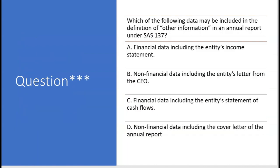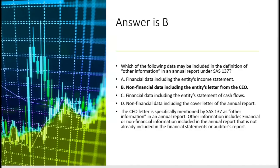Which of the following data may be included in the definition of other information in an annual report under SAS 137? A — financial data including the entity's income statement: no, because the income statement is a financial statement, and other information must be something other than what's already in the financial statements. C — financial data including the entity's statement of cash flows: also a financial statement, so not other information. B — non-financial data including the entity's letter from the CEO: that is other information, and the auditor has responsibility to read it. The CEO letter is specifically mentioned by SAS 137 as other information. So the answer is B.